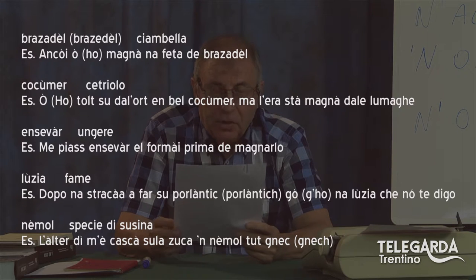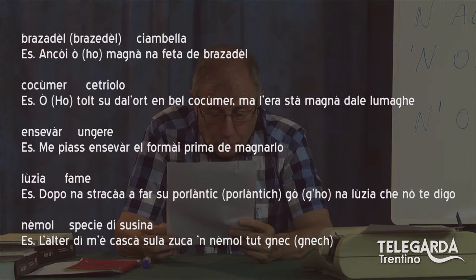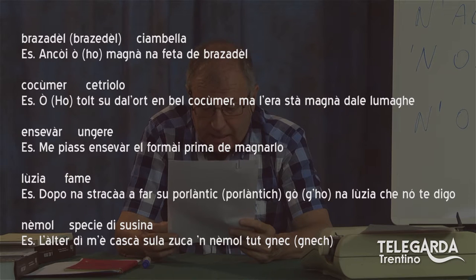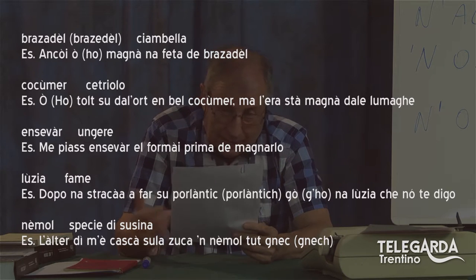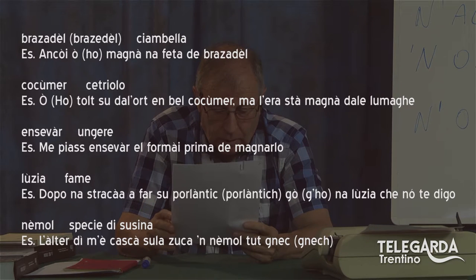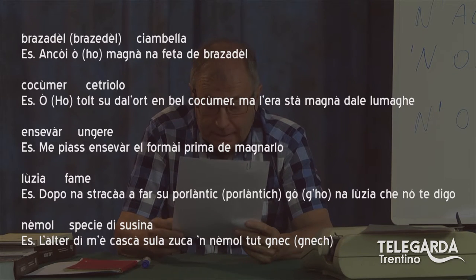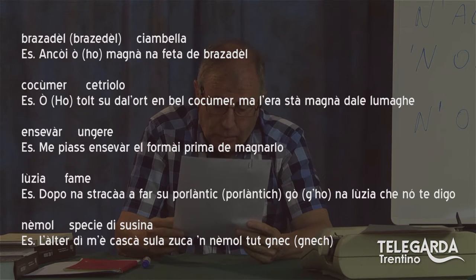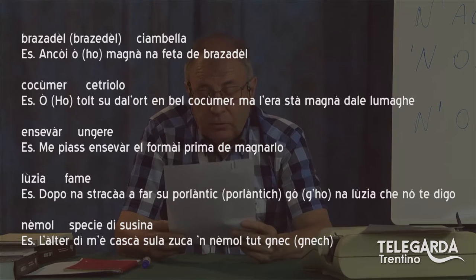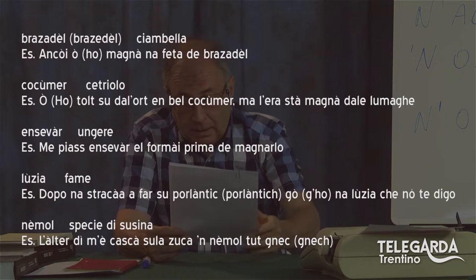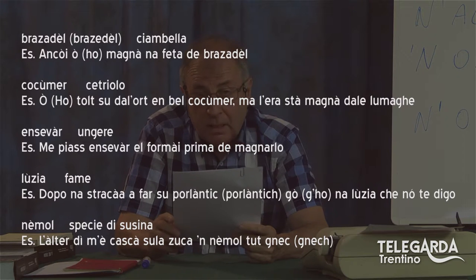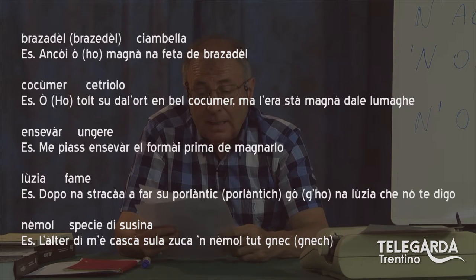Il nemol è una specie di susina. Esempio: L'alter di, me casca sulla zucca n'emol, tut gniec. L'alter con un bel accento tonico sulla a; me casca sulla zucca — chiaramente c'è lo scontro fra la a e la e e quindi la e cade e va l'apostrofo. Nemol, naturalmente accento fonico aperto. Tut gniec — stesso discorso di por l'antic: gniec con la semplice k o con kh per facilitare la pronuncia dura.